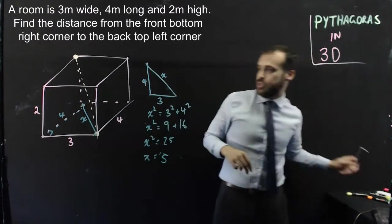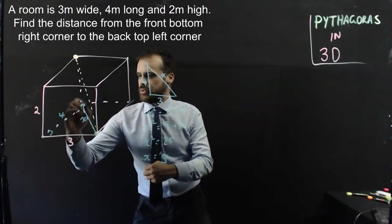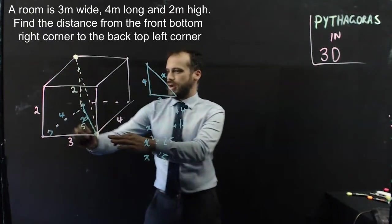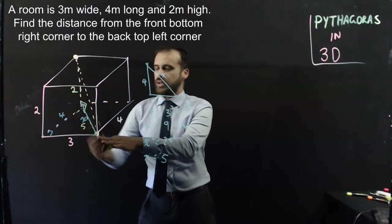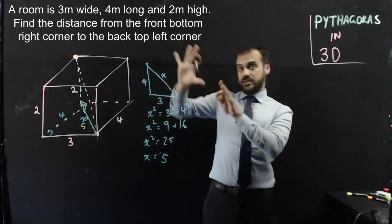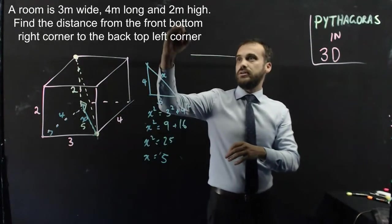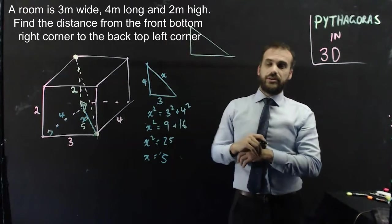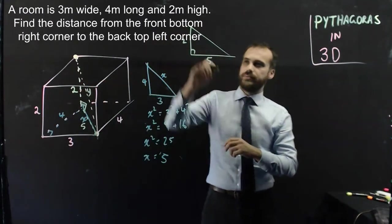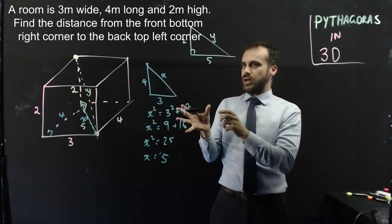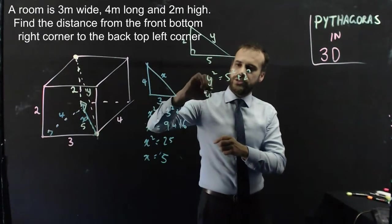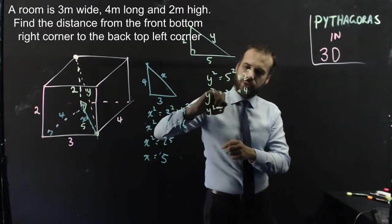We now know that x equals 5. We move into our next setup: the length x, which we now know to be 5, and the height which we knew all along was 2. We have a right angle there, so we have a new triangle standing up — 5 across the room, 2 high — and we call the length we're trying to find y.